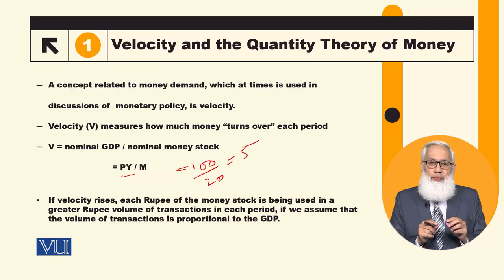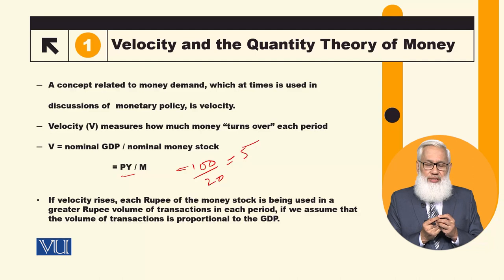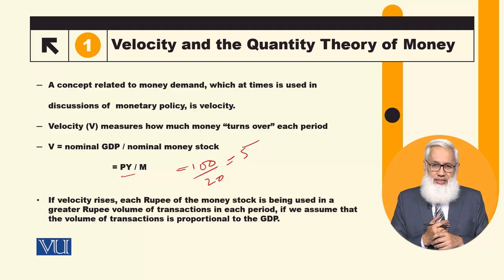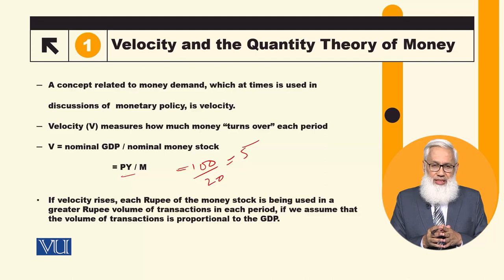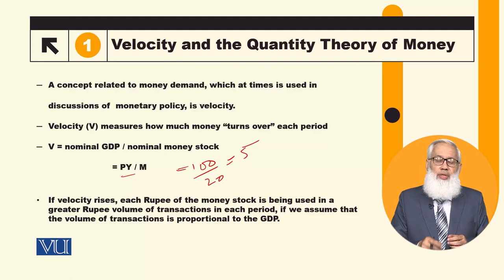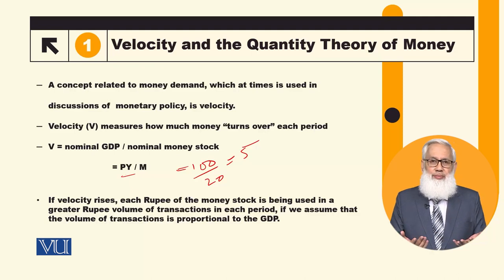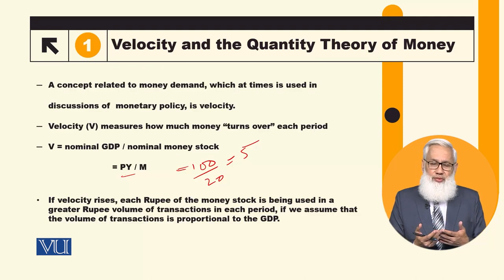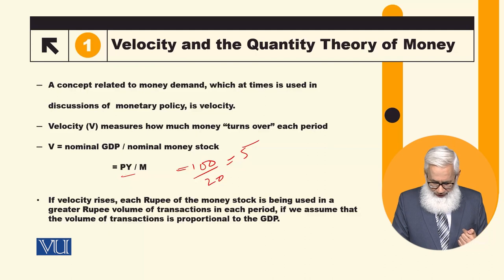Because we have to make transactions of 100 rupees, each unit of currency will be used 5 times. As you know, unlike other things which are consumed in one use, the rupee will be used again and again. This is the concept of velocity in this context.